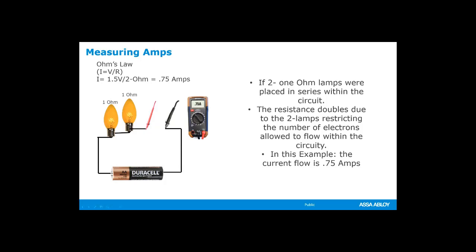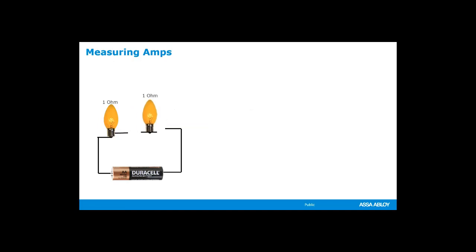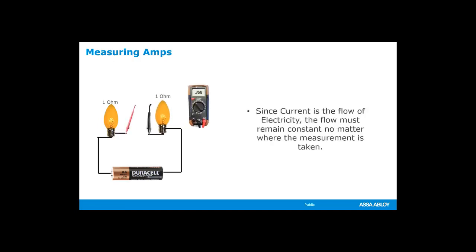Keep in mind that ohms is the resistance. Since you've doubled the resistance — 1.5 volts divided by 2 ohms — it gives you 0.75 amps. Since current is the flow of electricity and the flow must remain constant, no matter where it's measured it's going to remain constant. Whether you measure it between the lights or before and after a light, it does remain consistent.